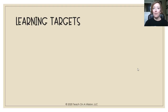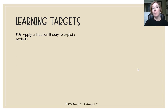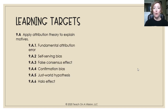By the end of this video, you should be able to apply the attribution theory to explain motives using several different terms: the fundamental attribution error, the self-serving bias, false consensus effect, confirmation bias, just world hypothesis, and the halo effect, also sometimes known as the halo error.